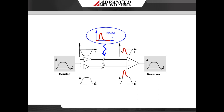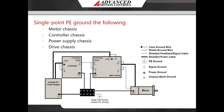Proper grounding is critical to diminish the effects of all noise sources by providing a low impedance path to ground for EMI currents. In most servo systems, the case grounds of all the system components should be connected to a single protective earth ground point in a star configuration. Grounding the case grounds at a central PE ground point through a single low resistance wire reduces the chance for ground loops and helps to minimize high frequency voltage differentials between components. All ground wires must be of a heavy gauge and be as short as possible.